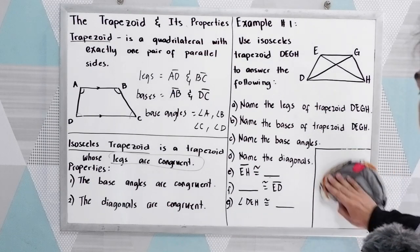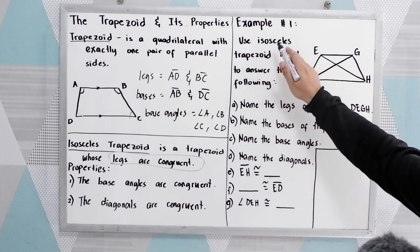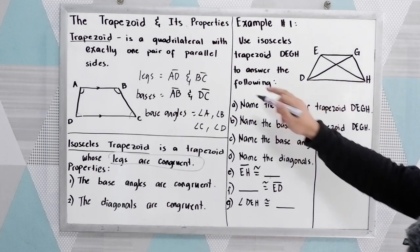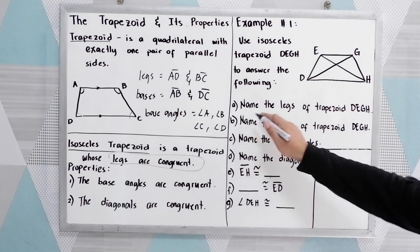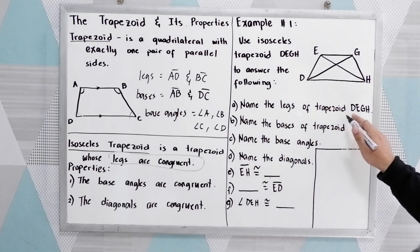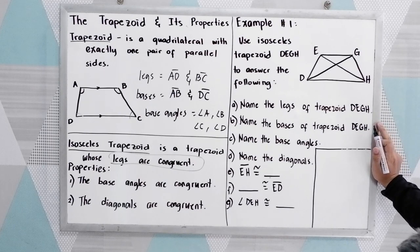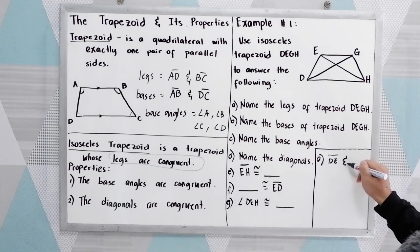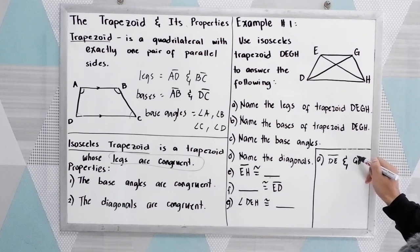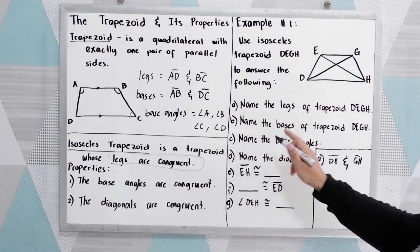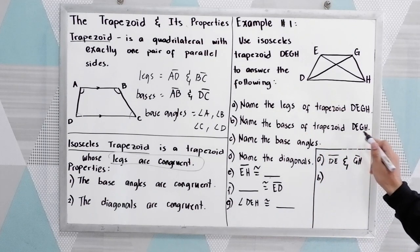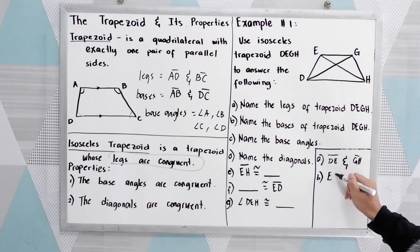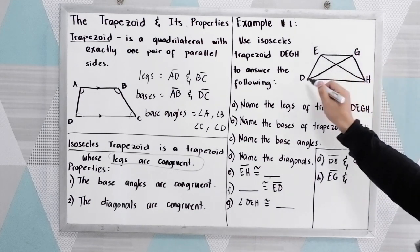Let's have example number one. Use the isosceles trapezoid DEGH to answer the following. Letter A: name the legs of trapezoid DEGH. Our legs are DE and GH. Letter B: name the bases of trapezoid DEGH. Our bases are EG and DH.